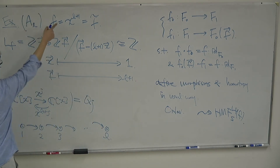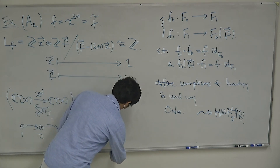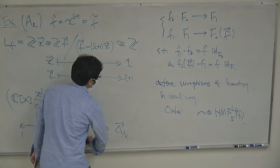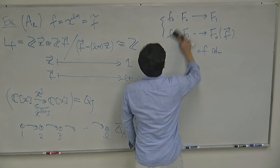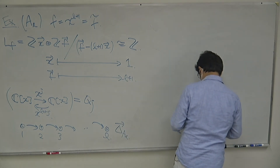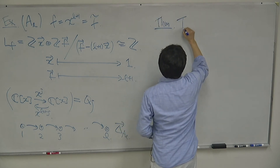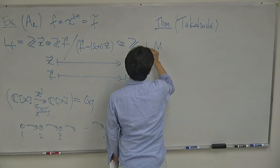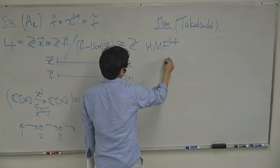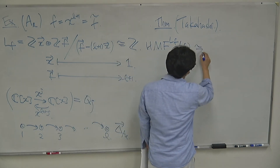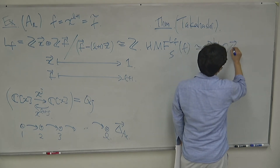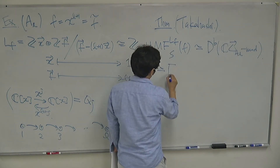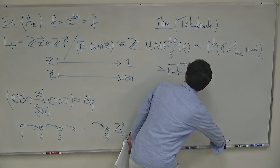A theorem by Takahashi states that the graded matrix factorization category, graded by LF, is equivalent to the bounded derived category of representations of the corresponding Dynkin quiver. Furthermore, this equals the Fukaya-Seidel category of F_{tL}.